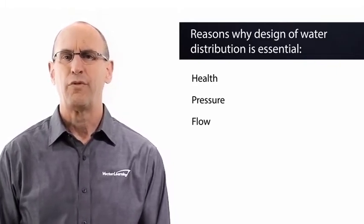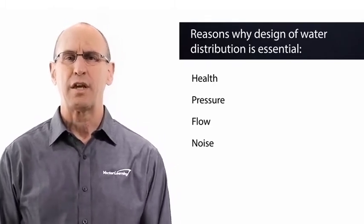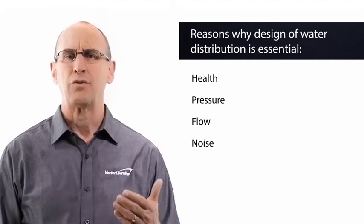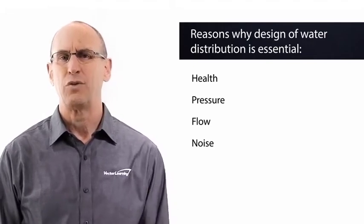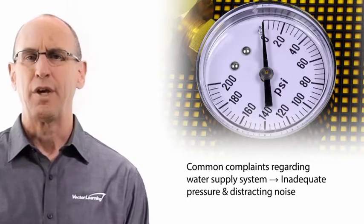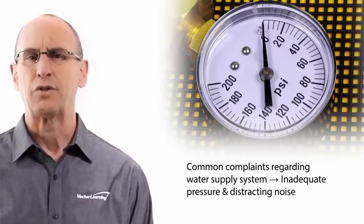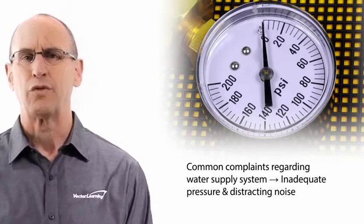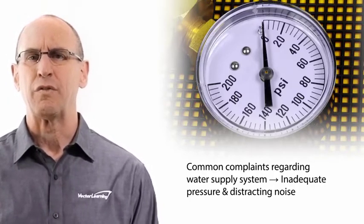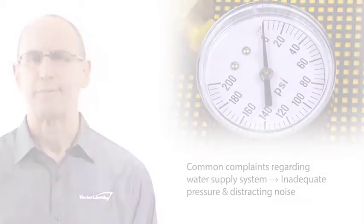Number four is noise. Velocities exceeding ten feet per second will result in excessive noise and can also cause hydraulic shock to the piping system. Some of the most common complaints regarding the water supply system are inadequate pressure and distracting noise from water flow. Noise is not detrimental to the operation of the system, but it can be a major nuisance for building occupants.